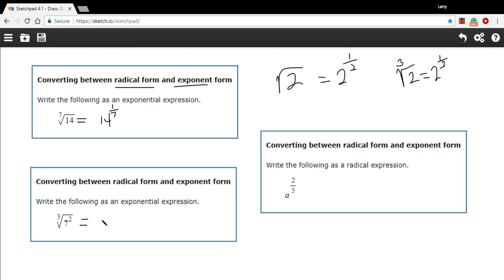So in this case, I'd write 7, and it would be to the two-thirds power. So the exponent goes on top, and the root goes on the bottom.